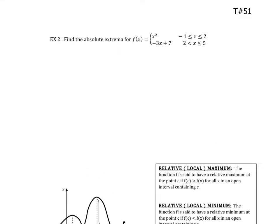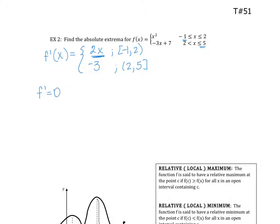Let's try the next one: find the absolute extrema for this piecewise function. I have to consider both pieces. You do have a closed interval because the interval of x's is closed — negative one to five. So candidates test. F'(x) is 2x for the first piece, and negative three from two to five. Is f' ever equal to zero? The only possibility is with the first piece, and that's zero at x = 0, which is in my interval.